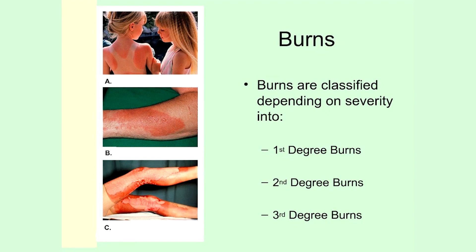The least severe type is a first degree burn. If you look at picture A, a sunburn is a good example. In these burns, we usually just get some redness — it's just the top layer of skin, the epidermis, that's actually damaged. These types of burns tend to heal very well on their own after some time.